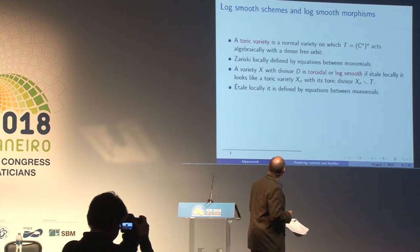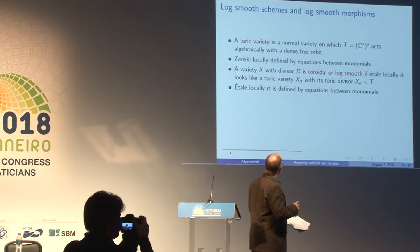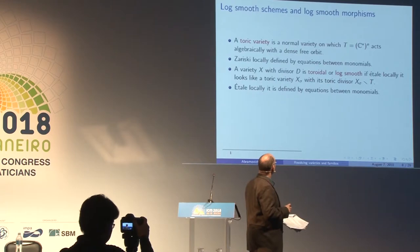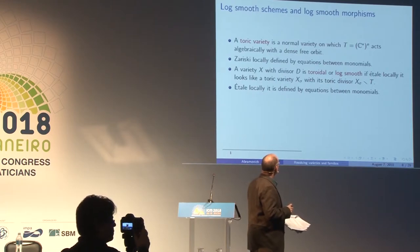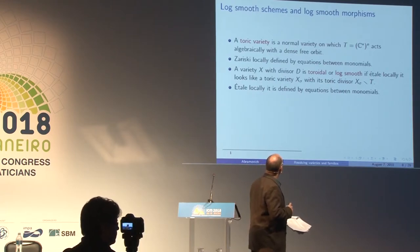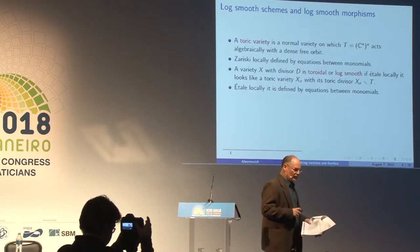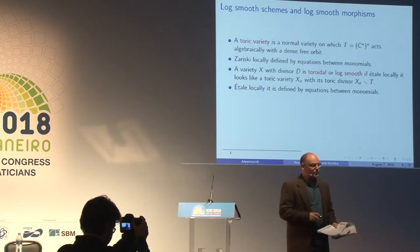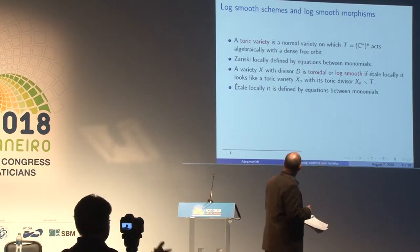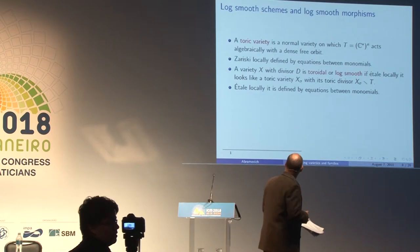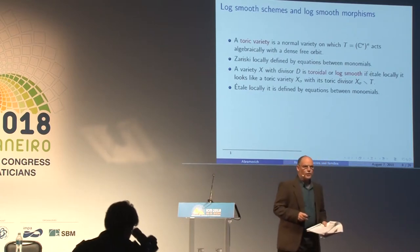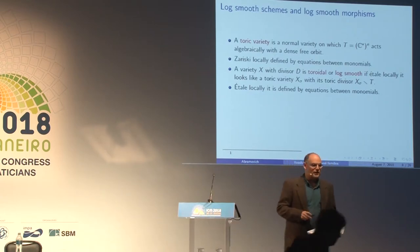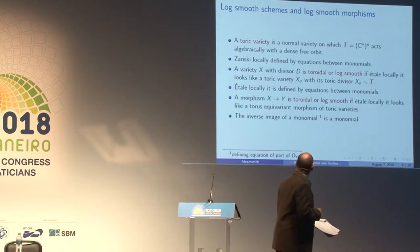A variety with a divisor D is toroidal or log smooth if étale locally it looks like a toric variety with its toric divisor. This is just the boundary of the toric variety — I want the variety with its boundary to locally, étale locally, look like a toric variety with its boundary, which means it is defined by monomial equations, by binomial equations.